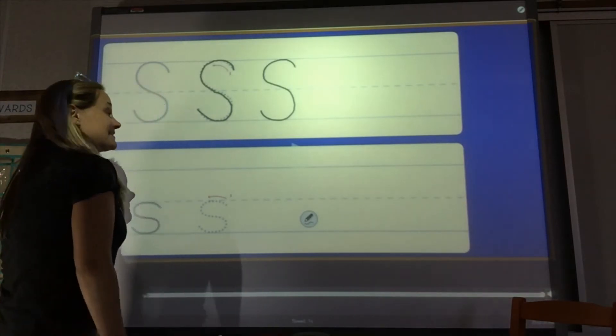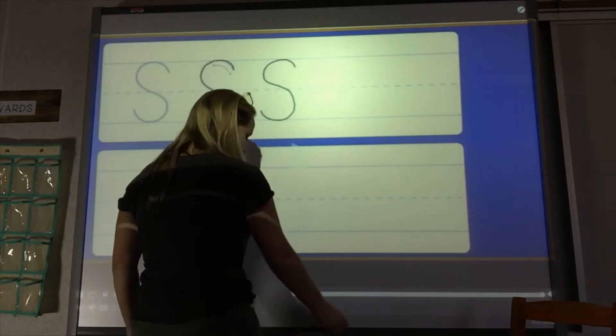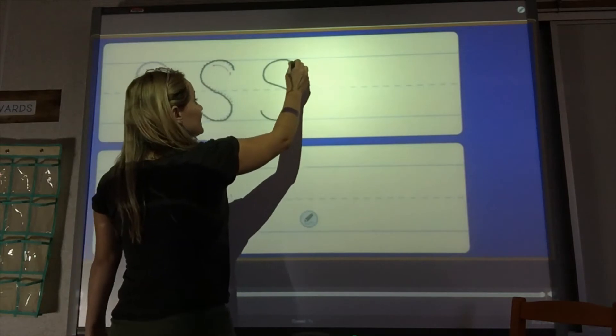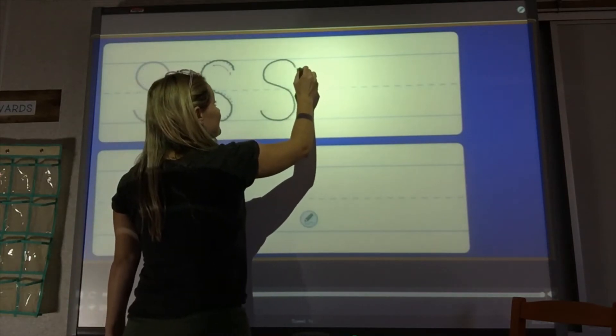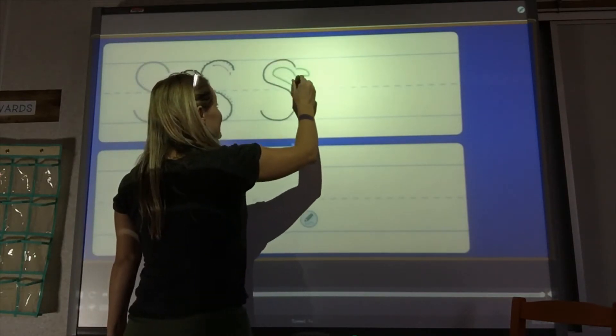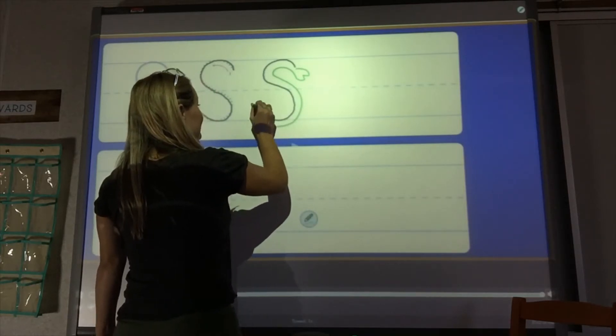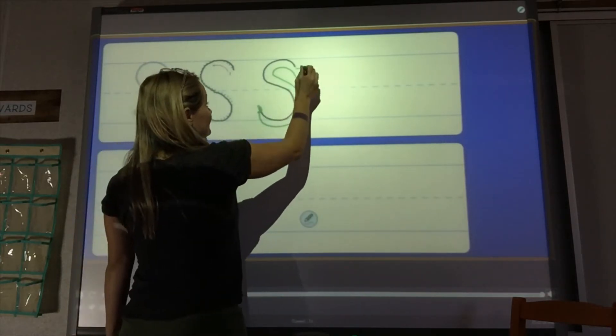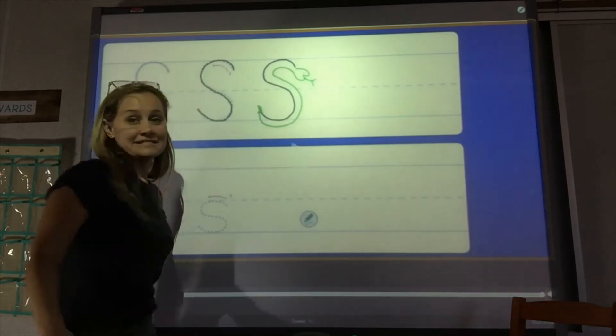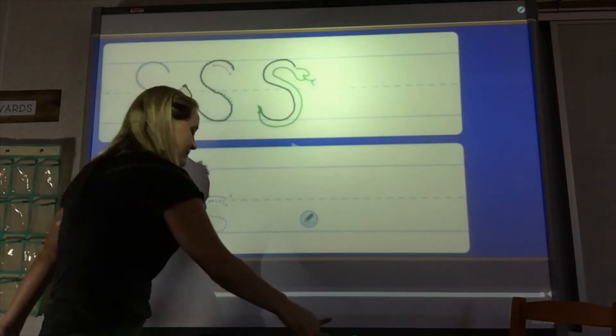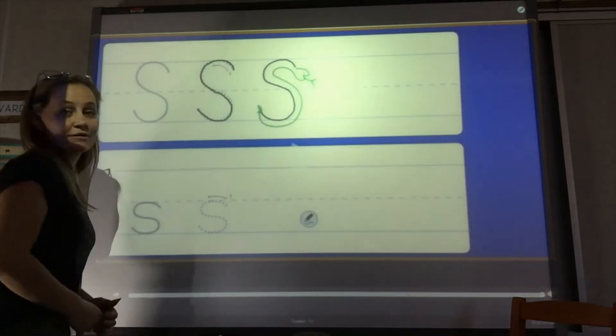Uppercase S. It kind of looks like a snake. A rattlesnake. A rattlesnake. Ssss. Okay, let's practice the lowercase S.